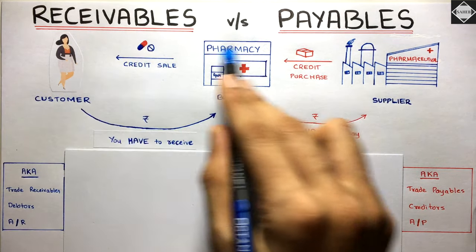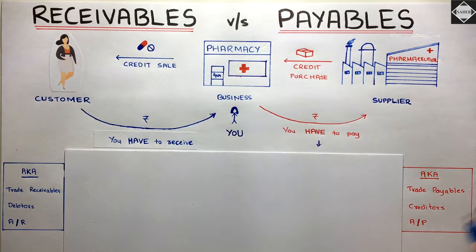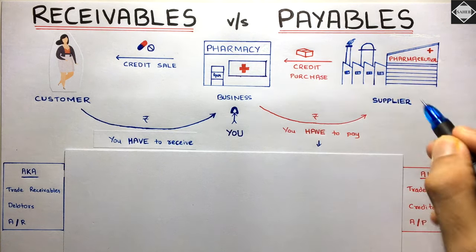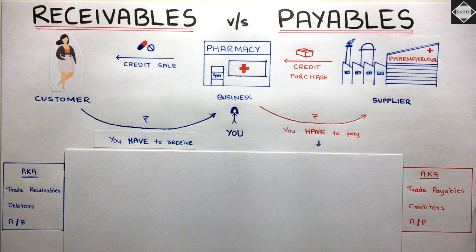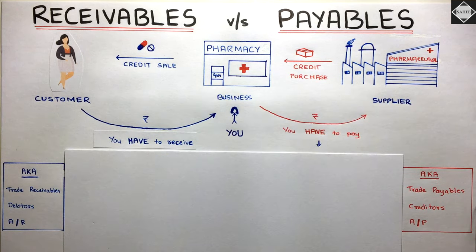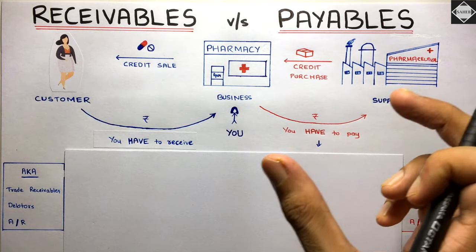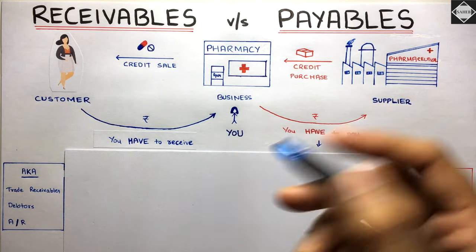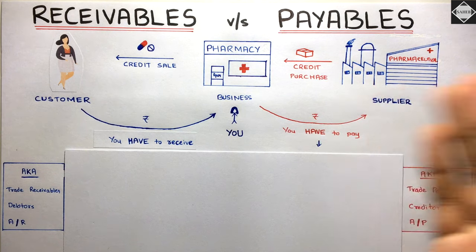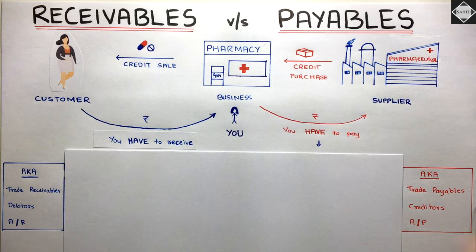Let's take an example to understand the concept of receivables and payables — it's really simple. Let's say you have a pharmacy business, and think about this from the business point of view only. First, you have made a credit purchase from your supplier. Credit purchase means you purchased medicines from your supplier but did not pay anything immediately. You promised your supplier to pay after a certain period — let's say 30 days. That 30-day period is called the credit period.